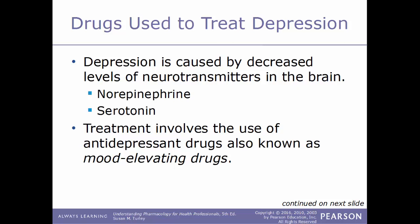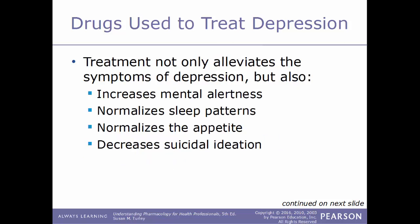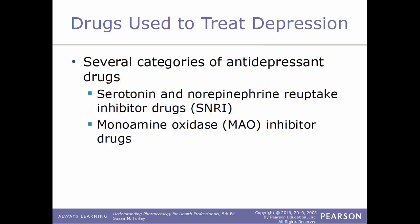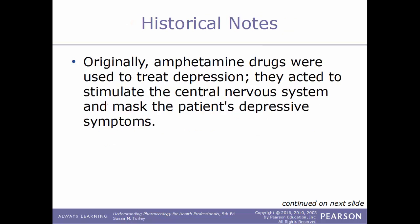Treatment involves the use of antidepressant drugs, known as mood-elevating drugs. Treatment not only alleviates depression symptoms but also increases mental alertness, normalizes sleep patterns and appetite, and decreases suicidal ideation. There are several categories of antidepressant drugs including tricyclic antidepressants, tetracyclic antidepressants, SSRIs (selective serotonin reuptake inhibitors), SNRIs (serotonin and norepinephrine reuptake inhibitors), and MAOs (monoamine oxidase inhibitors).